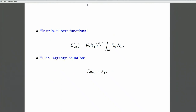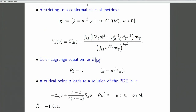This problem is actually a variational problem. Fix a manifold and look at the Riemannian metric; there is a functional where you integrate the scalar curvature divided by volume to a certain power. This functional has a critical point given by the Euler-Lagrange equation, which is actually the Einstein equation. Because we are looking for a new metric of this conformal form, it is a conformal metric.